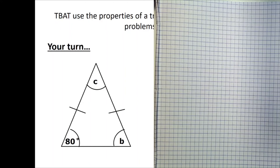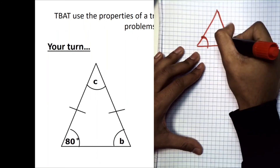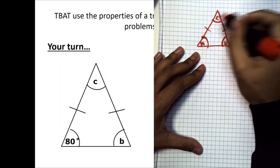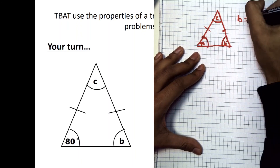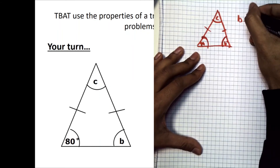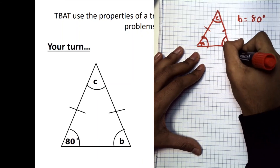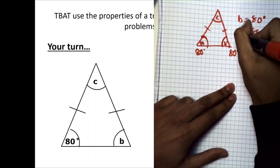Now have a go at working out angles b and c using the properties of an isosceles triangle — pause the video. Going through it now: the tick marks show two equal sides with the base here, so b equals 80 degrees because both base angles are equal. Then 80 plus 80 equals 160, and 180 minus 160 gives us c = 20 degrees.